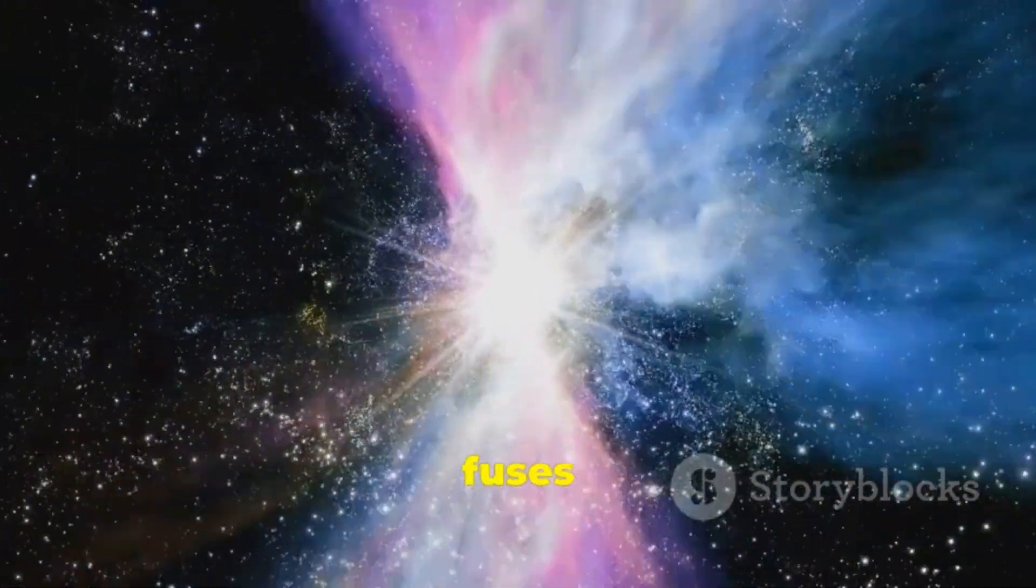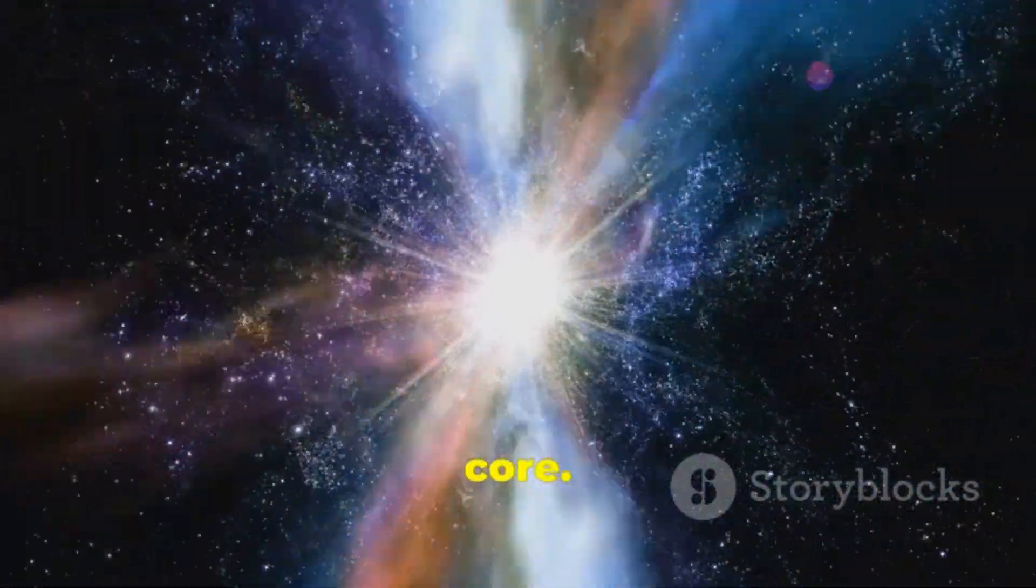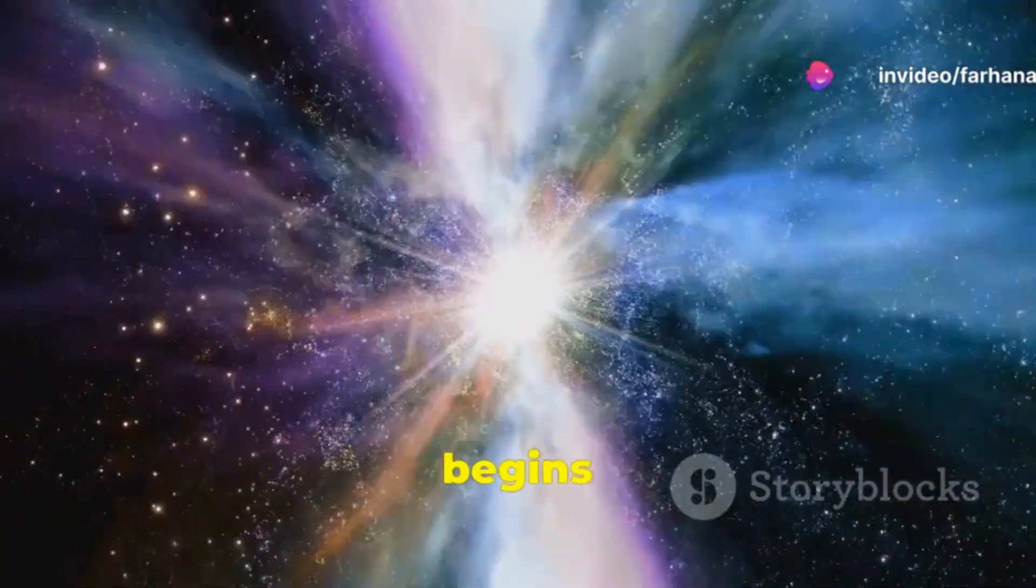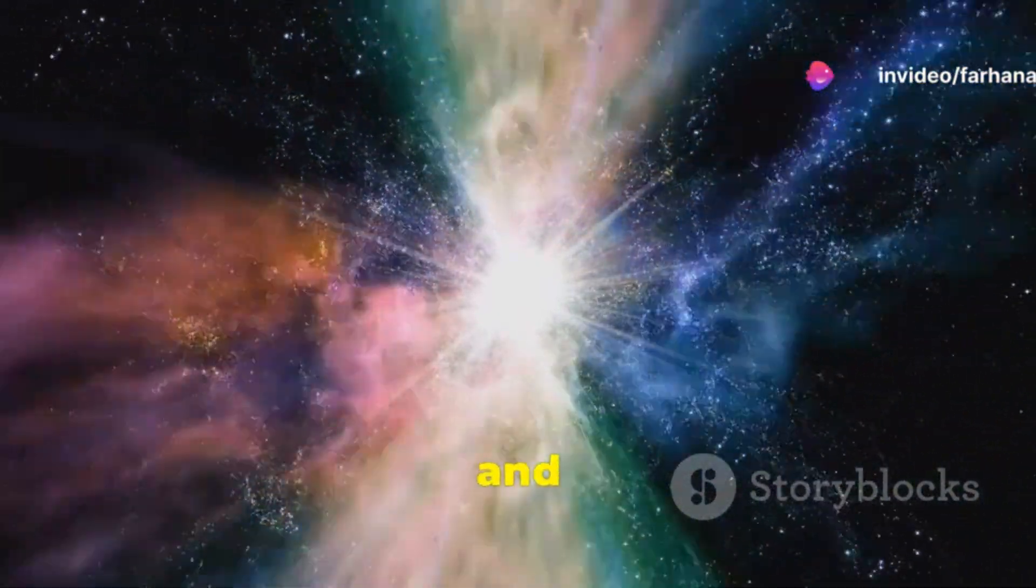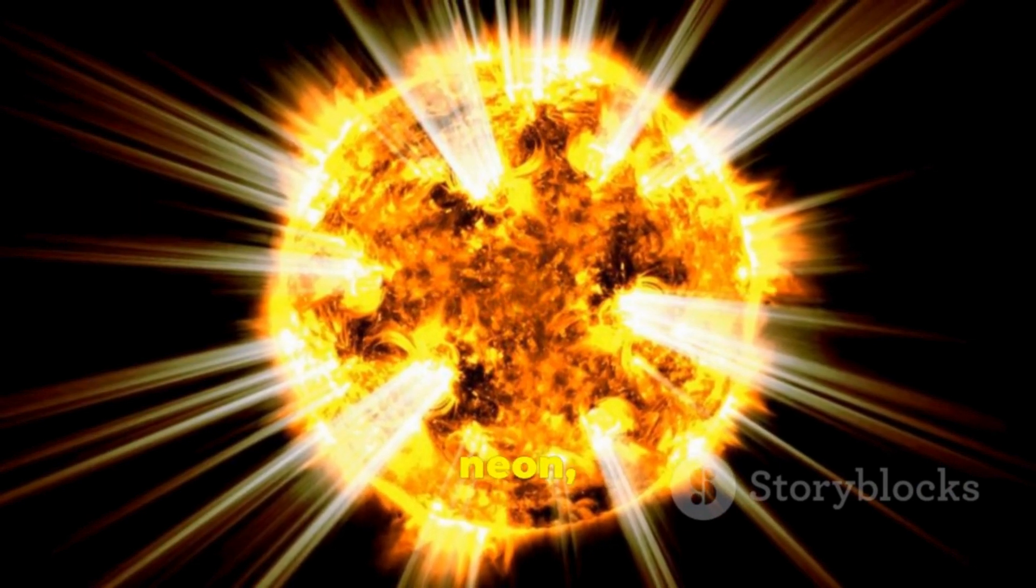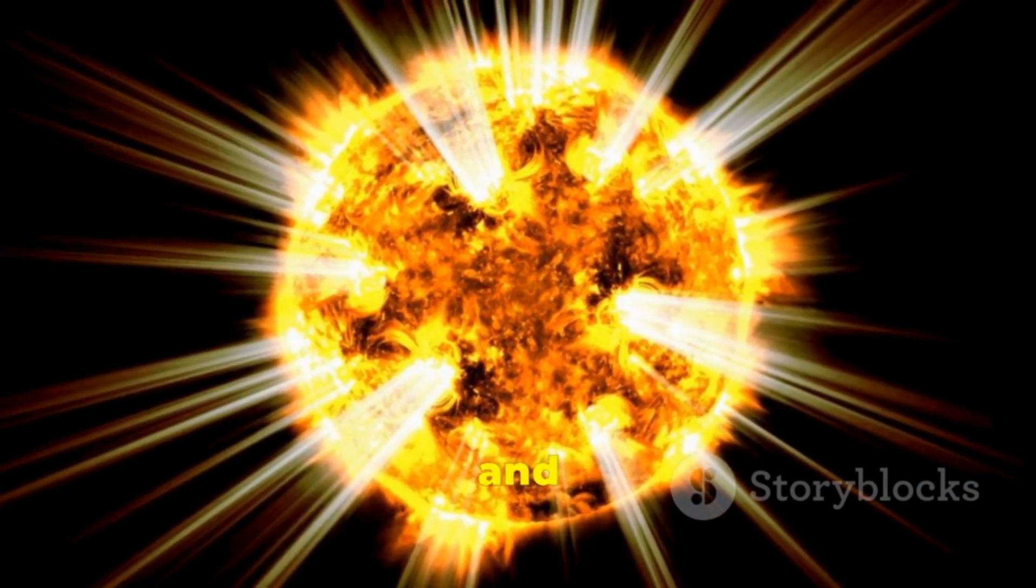During a star's life, it fuses hydrogen into helium in its core. When the hydrogen fuel is exhausted, the star begins to fuse helium into carbon and oxygen. This process continues, creating heavier elements like neon, magnesium, silicon and iron.